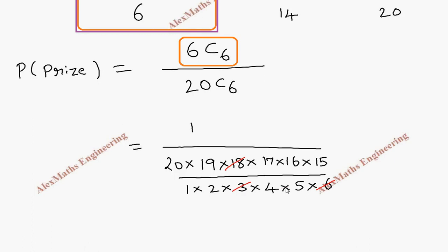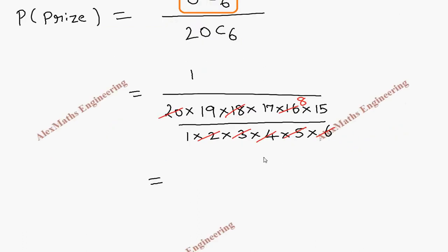Then 5×4 is 20, we can cancel this. So we're left with 2, and we can cancel with this 16, so it becomes 8. So totally we get 1 divided by 19 into 17 into 8 into...